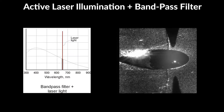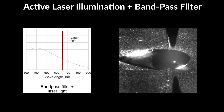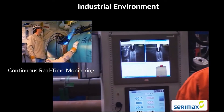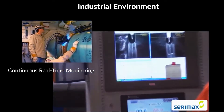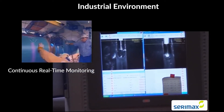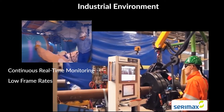When you use active laser illumination with a bandpass filter, you get the best possible results. B. Camera and Optic Properties. In industrial environments, the continuous real-time monitoring of welding processes is often desirable, which means that low frame rates are used.